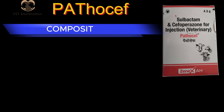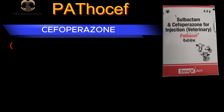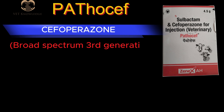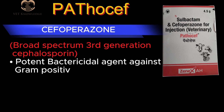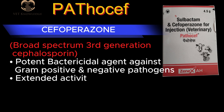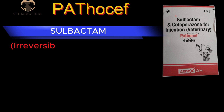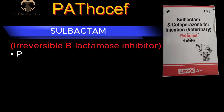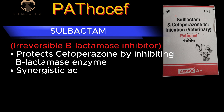Pathoceph Composition: Each vial contains Cefoperazone 3g and Sulbactam 1.5g. Cefoperazone is a broad-spectrum 3rd generation Cephalosporin and potent bactericidal agent active against gram-positive and gram-negative pathogens, with extended activity against anaerobic bacteria including Pseudomonas. Sulbactam is an irreversible beta-lactamase inhibitor that protects Cefoperazone by inhibiting the beta-lactamase enzyme.